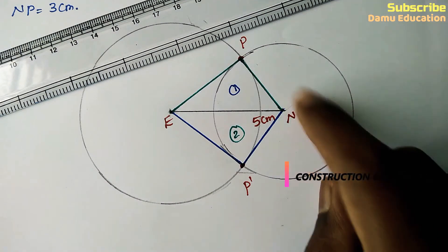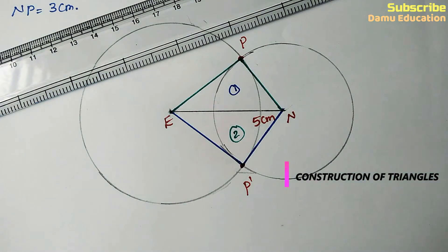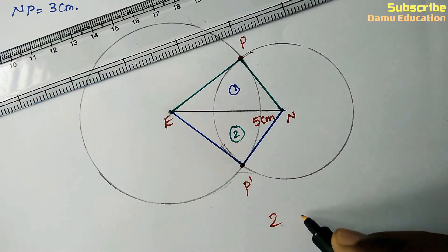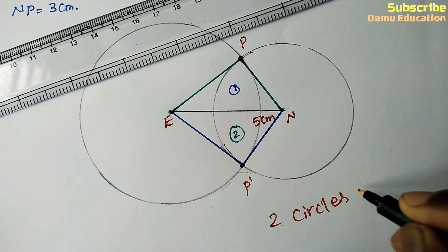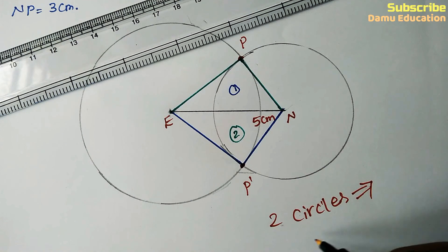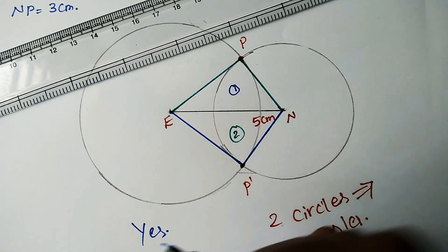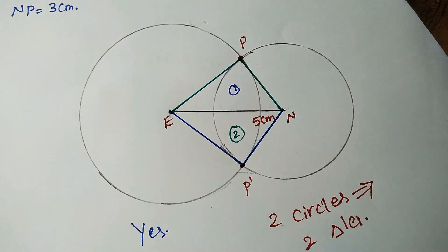Instead of drawing arcs, if you draw circles, you will always get two intersection points, and from that you will get two triangles. Is this possible with all cases? Yes, it is possible with all triangles. Thanks for watching this video. If you have any doubts, please comment below and please subscribe.